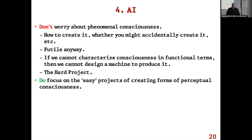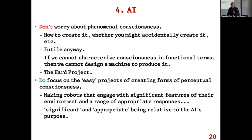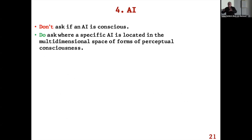Do focus on the easy project of creating forms of perceptual consciousness — making robots that engage with significant features of their environment and generate a range of appropriate responses, where 'significant' and 'appropriate' are relative to the AI's purposes. Don't ask if an AI is conscious in a binary way. Just ask where a specific AI is located in the multi-dimensional space of forms of perceptual consciousness I talked about earlier — and it might well be in regions not occupied by any living creature.